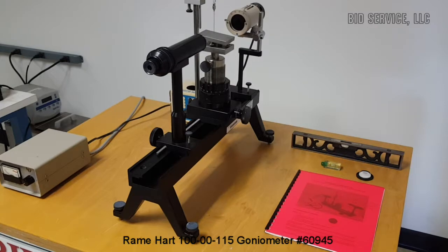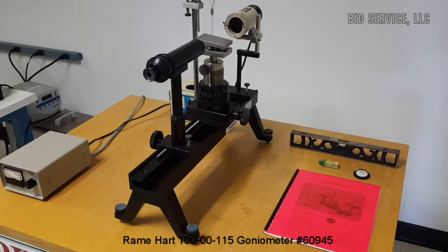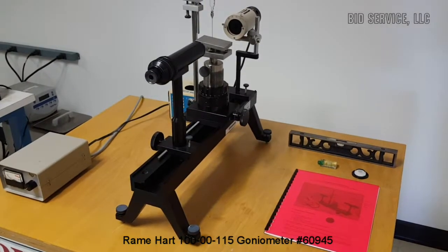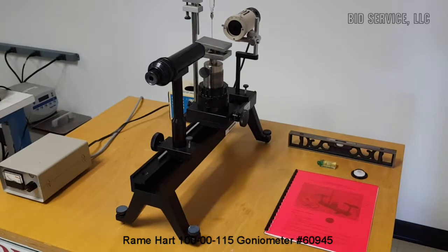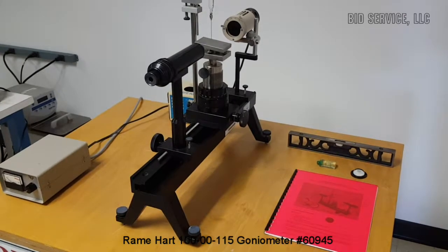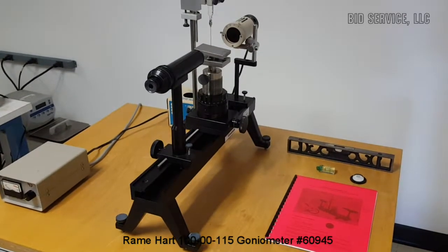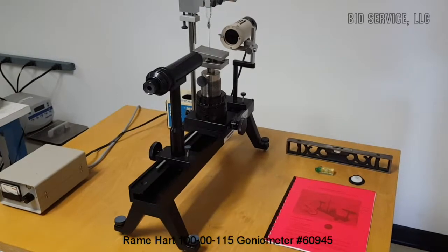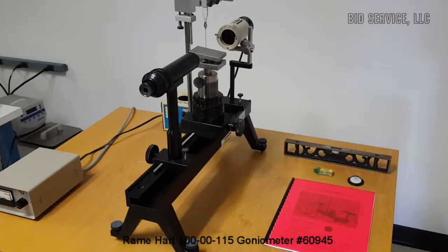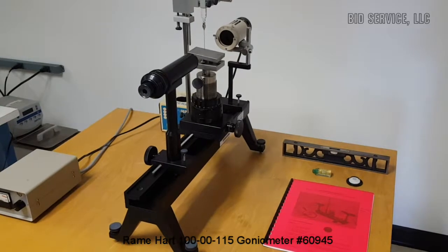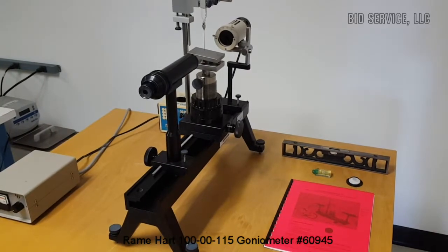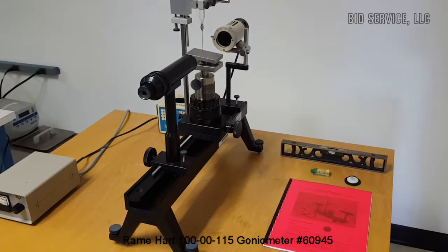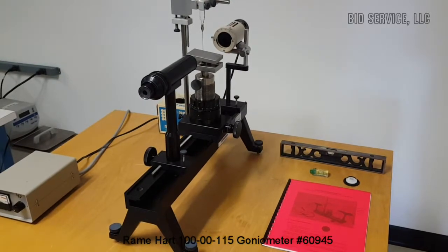This is the Ramhart 100-00-115 contact angle goniometer. It permits the study of contact angle under ambient temperatures and atmosphere. It measures contact between a liquid drop and a solid at room temperature. It can also be used to measure the surface tension.